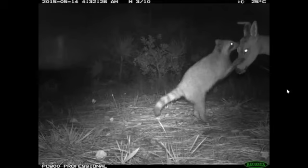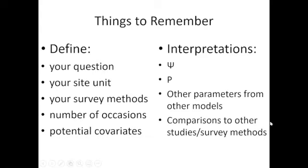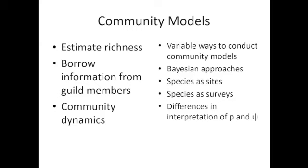We don't always get direct observations of species interactions, but community models allow us to estimate species richness and borrow information across guild members. For example, information from a mink can inform long-tailed weasel models, or a fisher and a marten — assuming similar habitat use but different detection rates — can inform one another. We can also examine how community composition and richness change over time, with species treated as sites or surveys depending on model structure.